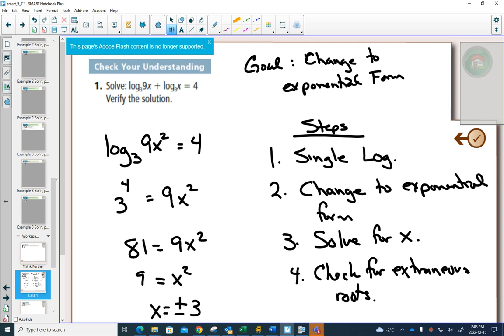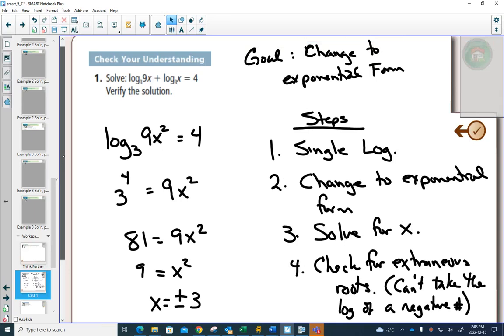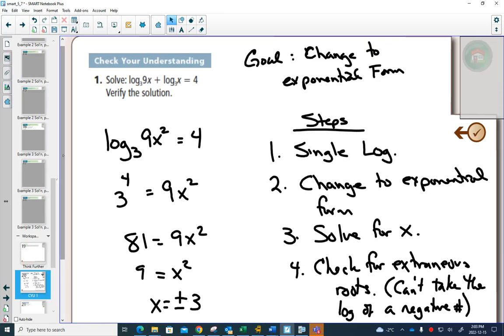And the way that we check for an extraneous root is the fact that you can't take the logarithm of a negative number. So, I need to now plug in both positive and negative 3 into my original equation. Can you see if you plug in positive 3? You only have positive numbers in logs. That's okay. But when you plug in negative 3, you'd have log 3 of negative 27. Logs of negative numbers don't exist.